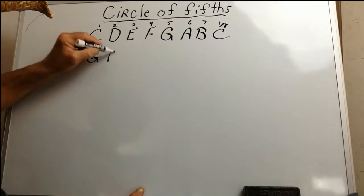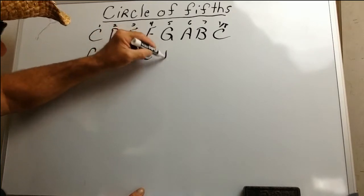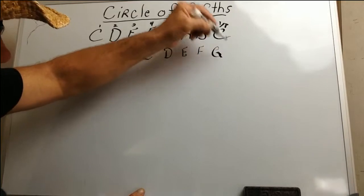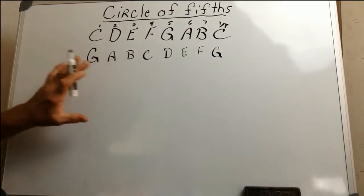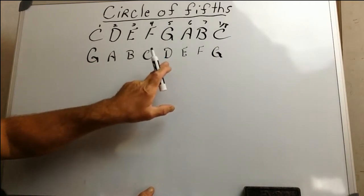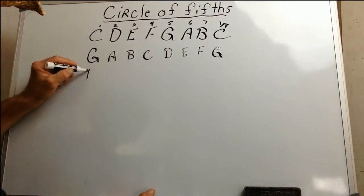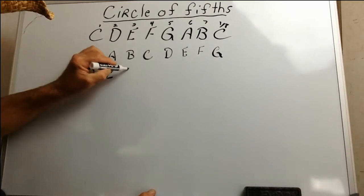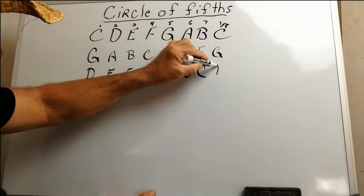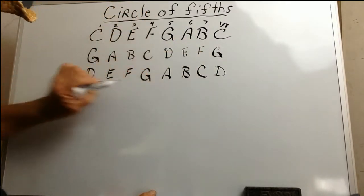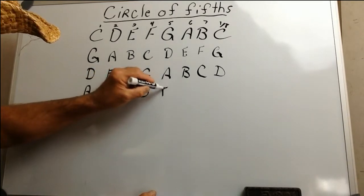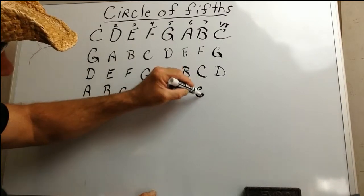So we put G, A, B, C, D, E, F, G. We won't put in any sharps or flats just yet because we're going to go all the way down, taking the fifth of each scale and carrying it down. So the next one starts on D: D, E, F, G, A, B, C, D. Then we take the fifth and bring A down: A, B, C, D, E, F, G, A.